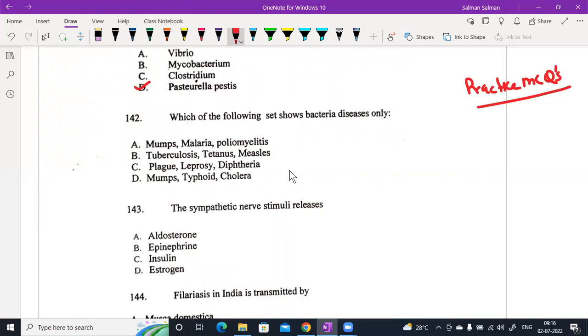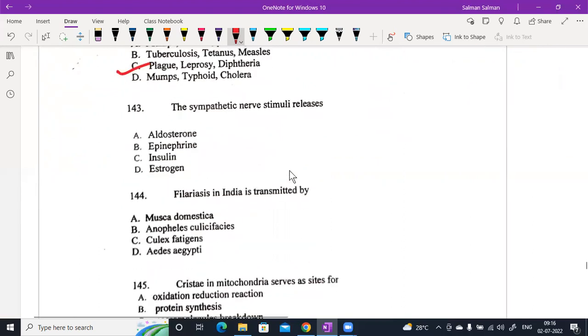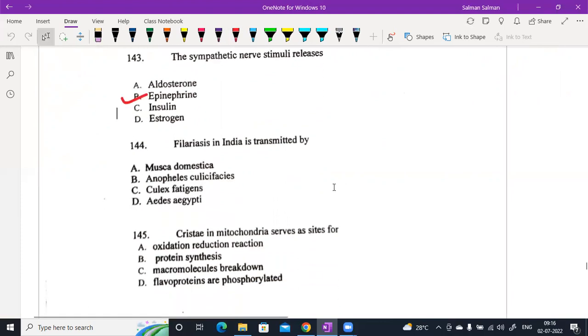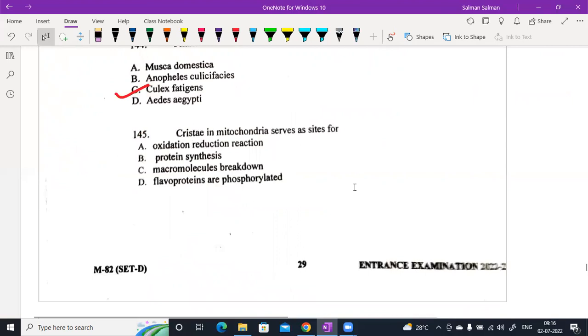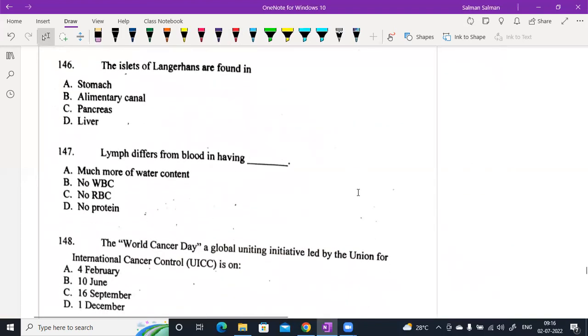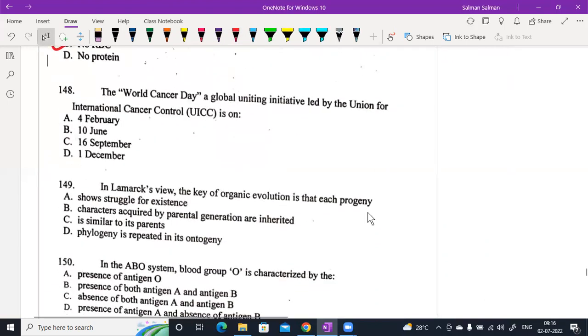Which of the following sets shows bacterial disease only? This is plague, leprosy, syphilis. We can find malaria is protist. Cristae and mitochondria serve as sites for oxidation reduction reaction. Islets of Langerhans are found in pancreas, option C. Lymph differs from blood in having no RBCs, no red blood cells. The World Cancer Day is a global uniting initiative led by Union for International Cancer Control, it is on 4th February.